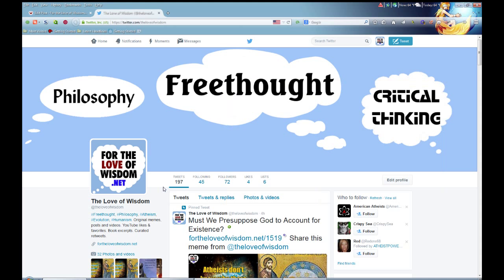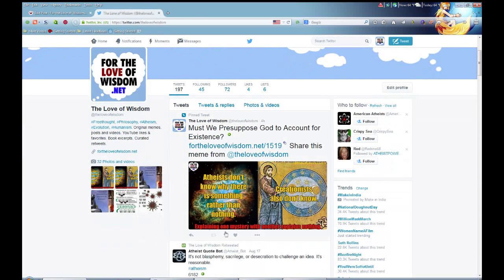I wanted to point out at the end of this video that I now have my own Twitter account for this YouTube channel. It's called At the Love of Wisdom. The longer name that corresponds with this channel was not available because Twitter doesn't allow names to be that long. And this account is going to be focused on free thought and philosophy, atheism, evolution, and humanism. And it will include original memes, posts and videos, my YouTube likes and favorites, book excerpts from books I'm reading on my Kindle, and curated retweets. Here is a meme I made earlier today, and I'll be posting more of these as I make more of them.